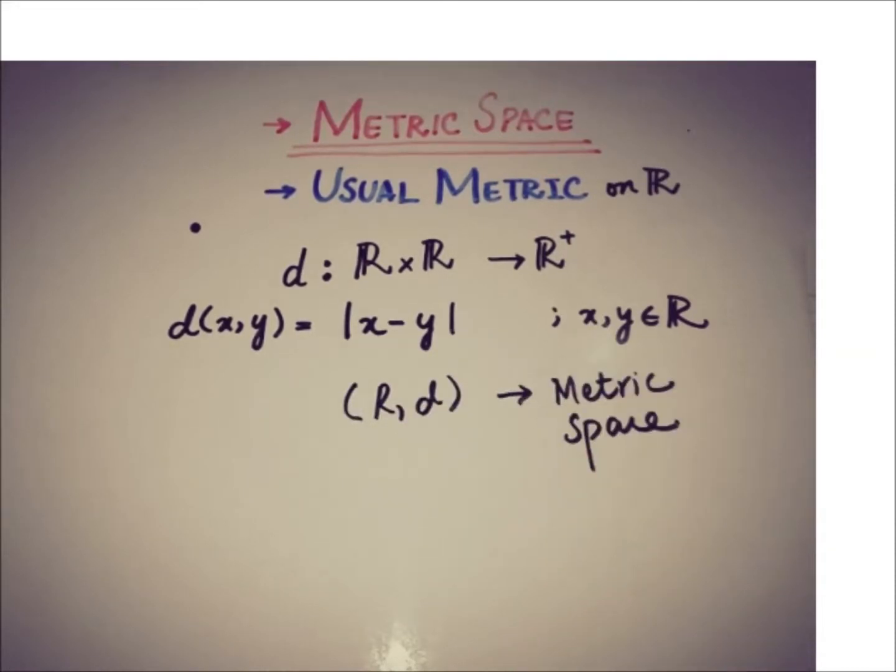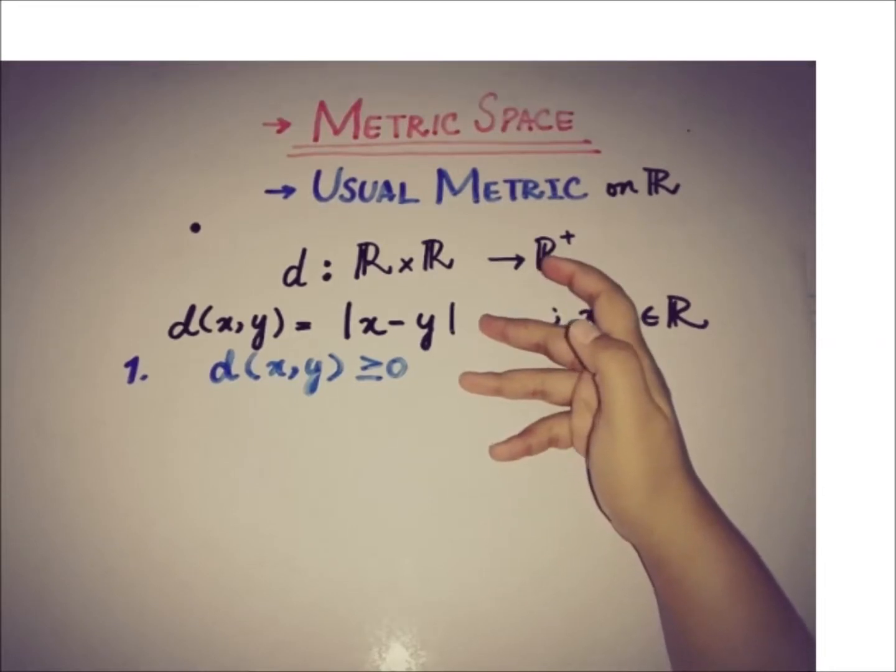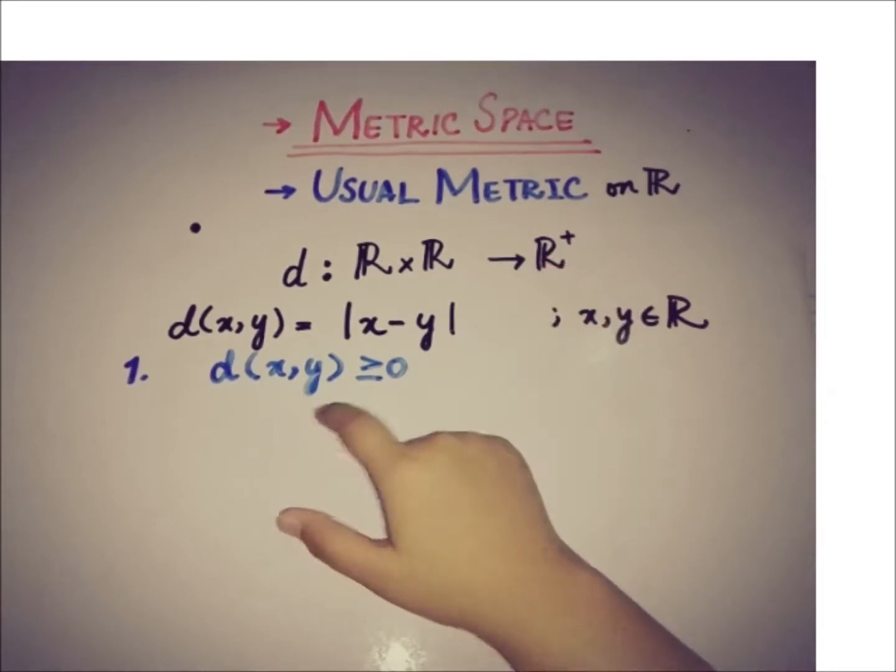Now we'll see how to prove it as a metric, that the function d here from ℝ cross ℝ to ℝ satisfies the three basic properties of being a metric. So the first property is that the metric should always be positive and we can see that by definition this metric is always positive for all values of x and y.